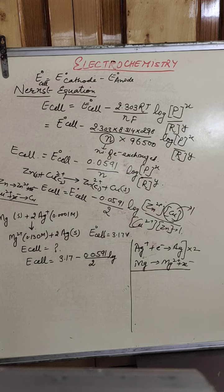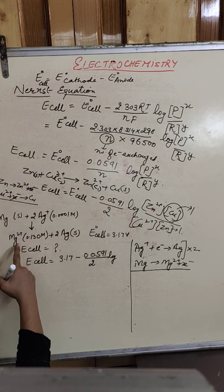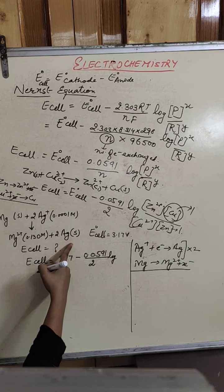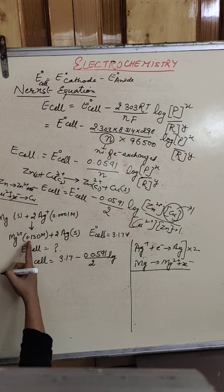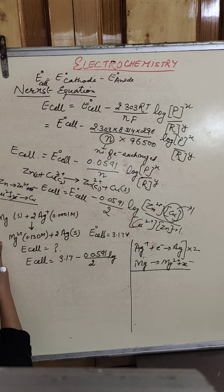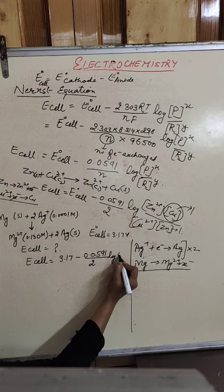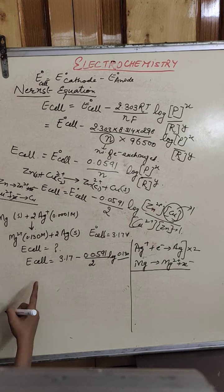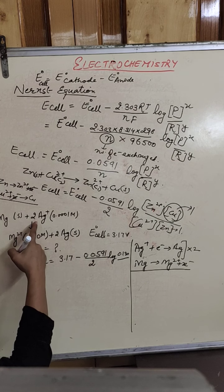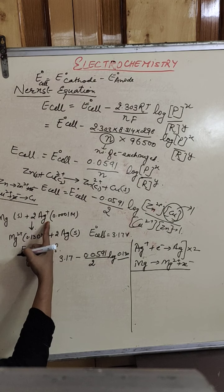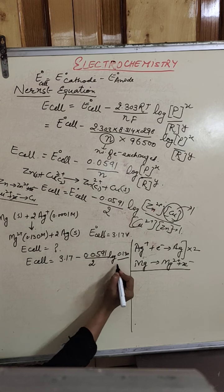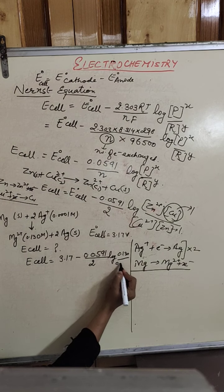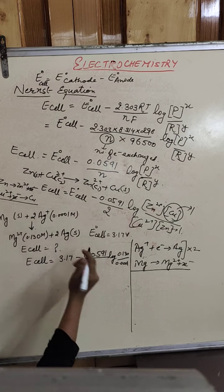Now for the log term: concentration of product — the product is magnesium ions at 0.130 molar; silver solid is not included. There is no coefficient on magnesium ion, so no power is applied — it is simply 0.130. Divided by the concentration of reactants: magnesium solid is not included, and silver ion concentration is 0.0001, raised to the power 2.